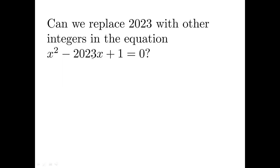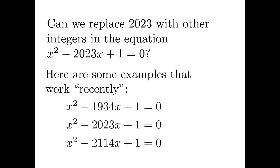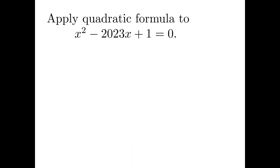Before we solve the problem, let's look at the quadratic equation. We may ask: why 2023? Can we replace 2023 with other integers? The answer is yes, but not arbitrarily. The previous number we could use was 1934 — that was 89 years ago — and we have to wait another 91 years until 2114. Alpha and beta are two positive real numbers, both irrational.